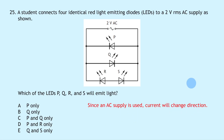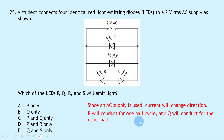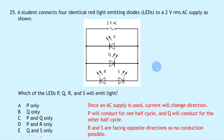Since an AC supply is used, current changes direction. LEDs P and Q are on separate branches, so each conducts for one half cycle — P for one half, Q for the other. In the branch with R and S pointing in opposite directions, when one would conduct the other blocks it, so no current flows in that branch. Therefore P and Q emit light, giving answer C.